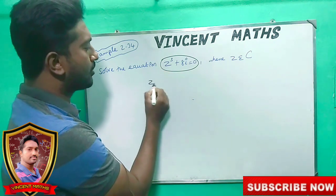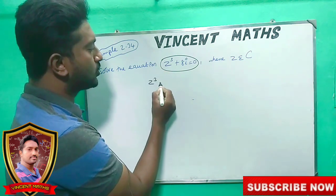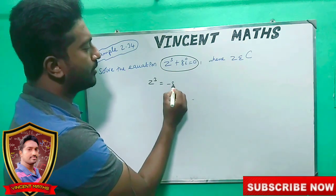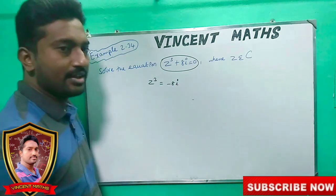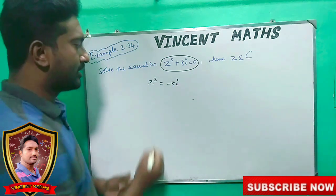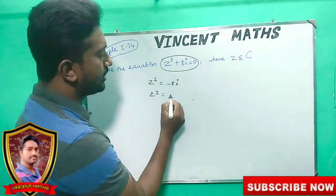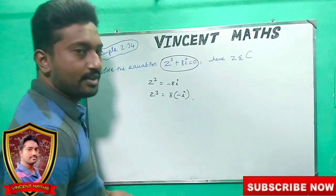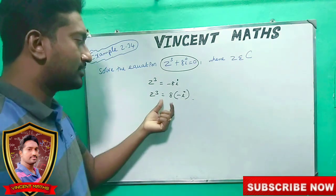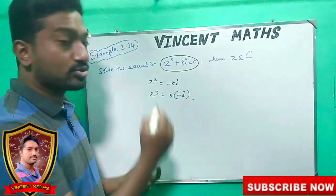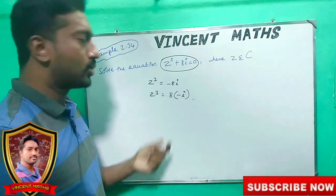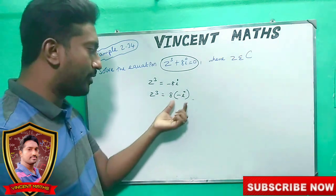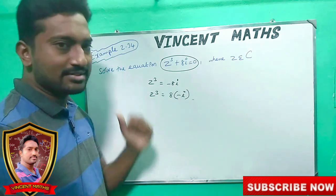If you look at the cube: z³ = 8 + (-8i). How much is it? z cube equals 8 into minus i. There is a minus value, that's why we write it as 8 into minus i.